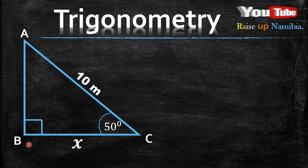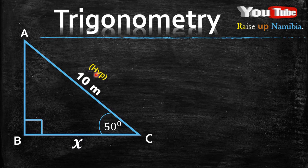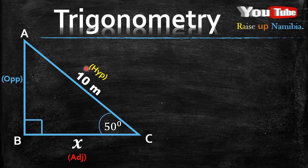Say you are asked to find line BC, which is our X here. First of all, always label your sides. Let's start with the hypotenuse — it is the line opposite the 90 degree, so this line is our hypotenuse. Our opposite will be the line that is opposite the other angle we are given, which is 50 degrees. So that line is our opposite. And because we have labelled these two sides already, this side will be our adjacent. Now that we have labelled our sides, bring out your word: SOHCAHTOA.